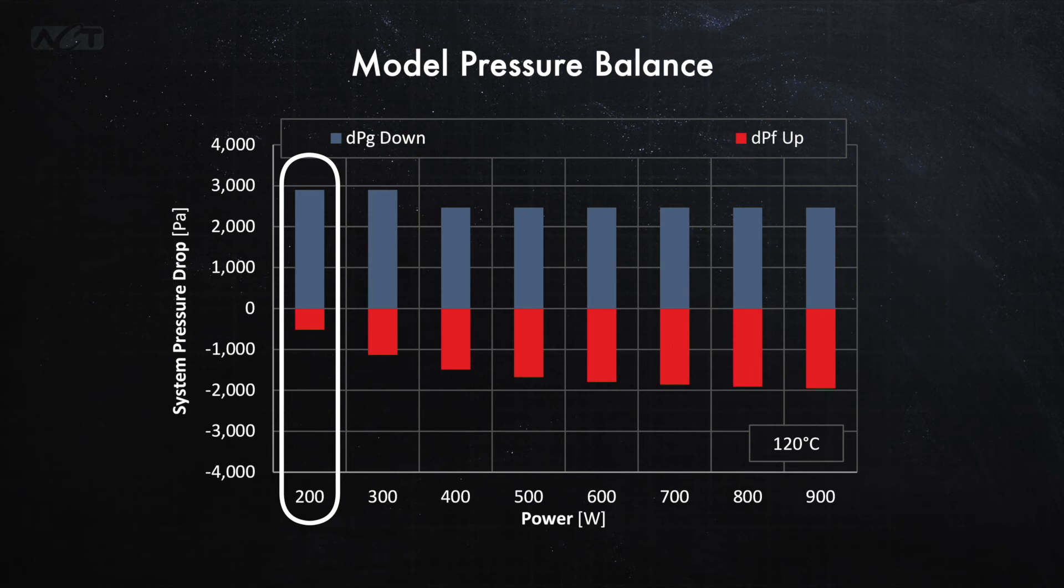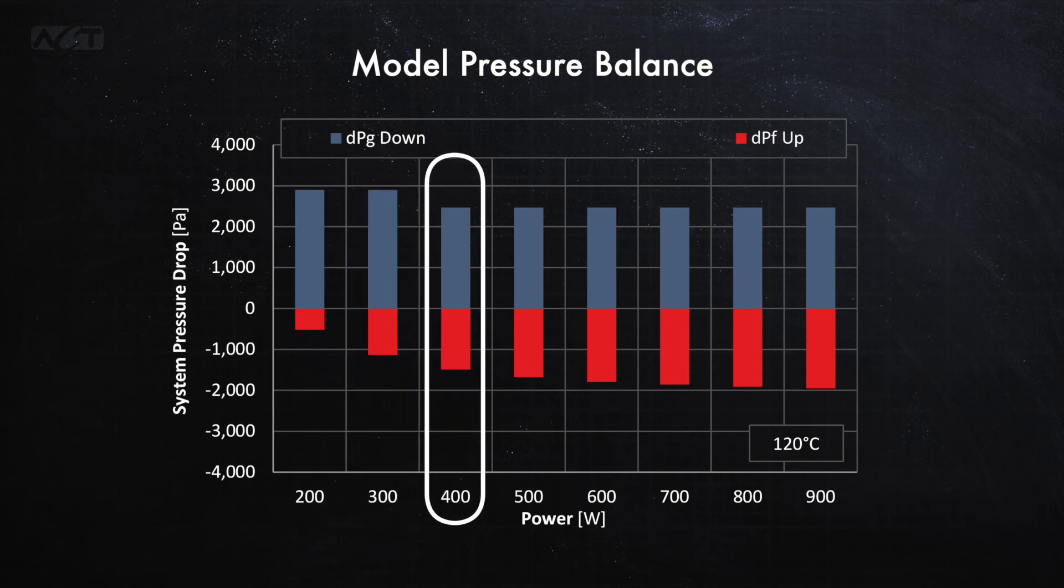At 200 watts, the void fraction within the two-phase flow is low, which results in a low two-phase frictional pressure drop. As power is increased to 300 and 400 watts, the void fraction increases, and so does the frictional pressure drop.